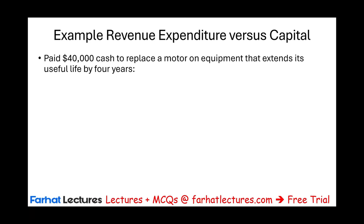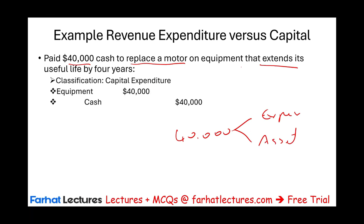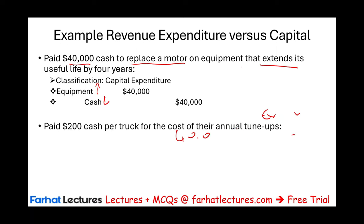Let's look at an example from a journal entry perspective. The company paid $40,000 to replace a motor on equipment that extends its useful life by four years. How should this $40,000 be treated — as an expense or a capital expenditure? Since it extends the useful life, it's a capital expenditure. You increase the equipment account and reduce cash. Notice this transaction is non-recurring.